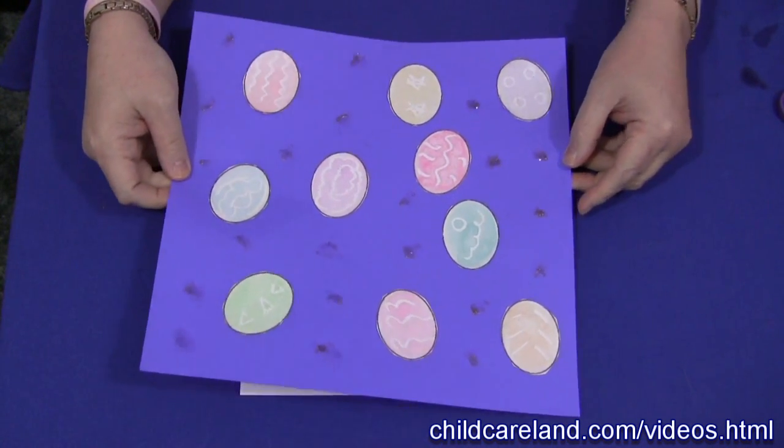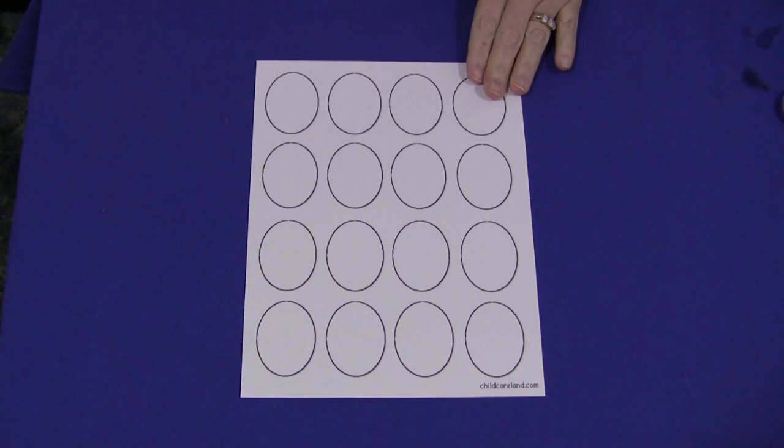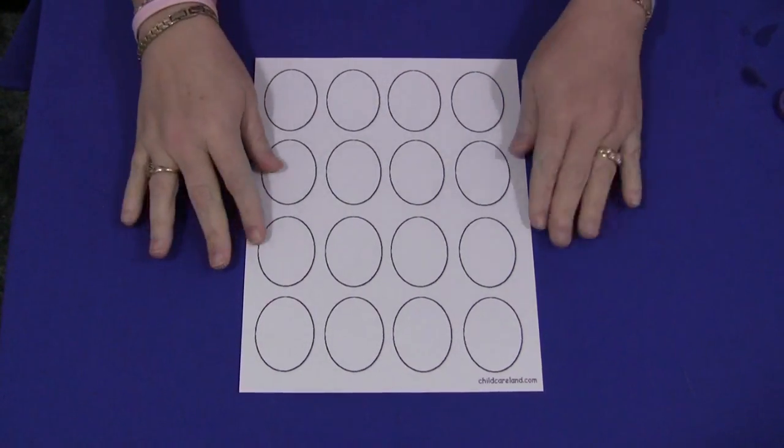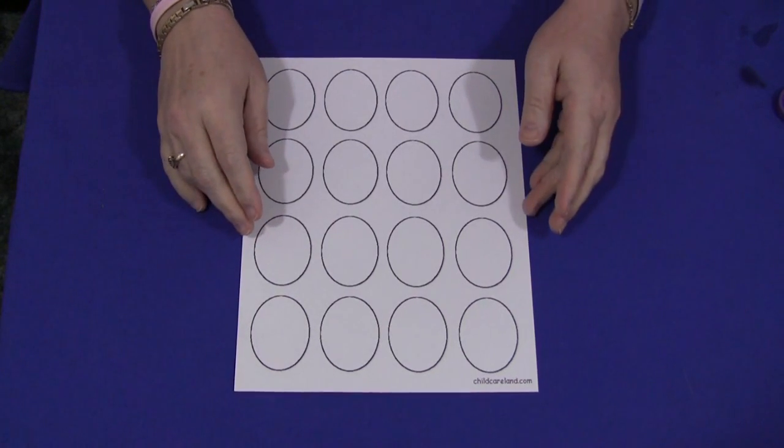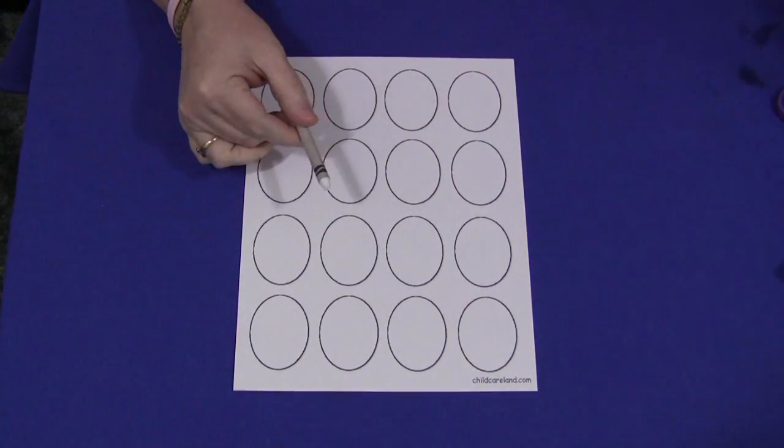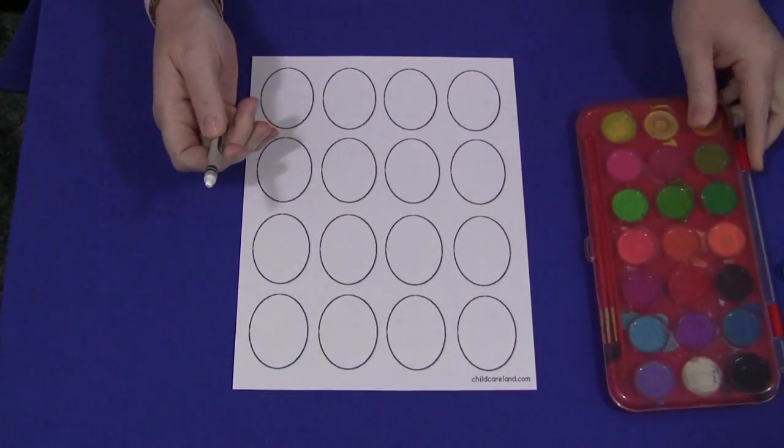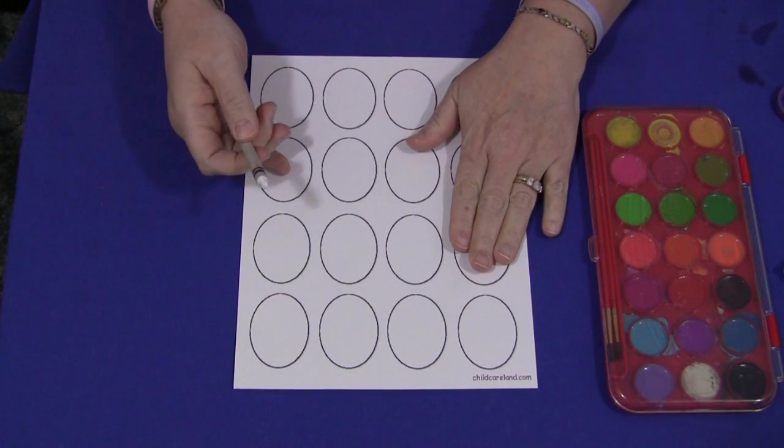All you need to have is this egg pattern which can be found on my website at ChildCareLand.com. Underneath the video section you would print it out on cardstock paper. You would also need to have a white crayon and some watercolor paint and of course paper that you're going to glue the eggs on once you've cut them out.